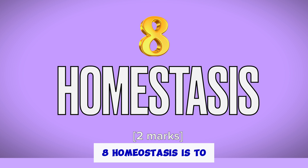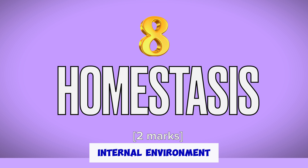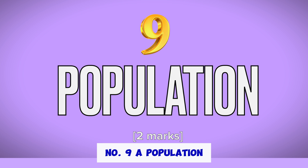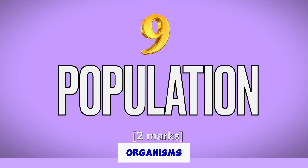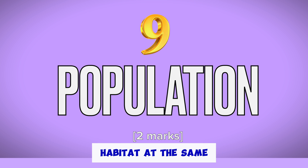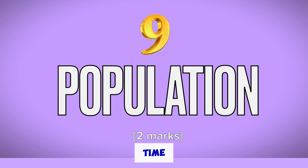Number 8: Homeostasis is to maintain a constant internal environment. Number 9: A population is a group of organisms of the same species living in the same habitat at the same time.